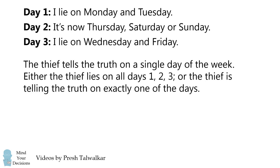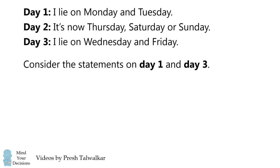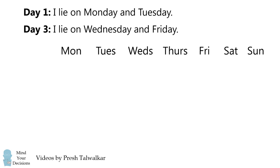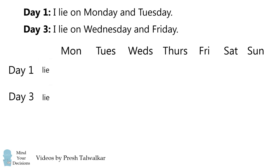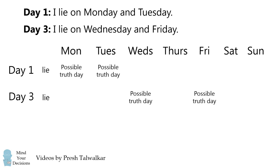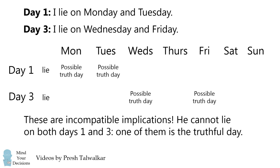Now, let's solve the main puzzle. The thief tells the truth on a single day of the week. So, either the thief is lying on all of the days 1, 2, and 3, or the thief is telling the truth on exactly one of the days. To figure out which of these possibilities is true, let's consider the statements on day 1 and day 3. Suppose that the thief is lying on both of these days. In order that the statement on day 1 be false, the thief would have to tell the truth on one of the days, Monday or Tuesday. Similarly, in order that the statement on day 3 be false, the thief would have to be telling the truth on Wednesday or Friday. Now, this is a problem because there's only one day that the thief is telling the truth, and these implications don't overlap. They're incompatible implications.